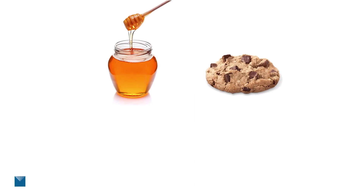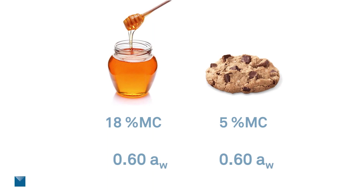Here is a little demonstration comparing honey versus a nice crunchy cookie. Would you expect the moisture content of honey to be much higher than the cookie? The honey is a nice liquid and the cookie is nice and crunchy — and you would be right. The moisture content of honey is around 18% and for the cookie it's only 5%. But what about the water activity — do you think they are the same or different? In this case, the water activities of the honey and the cookie are exactly the same. Products can have drastically different moisture contents but the same water activity, and they are both shelf stable.